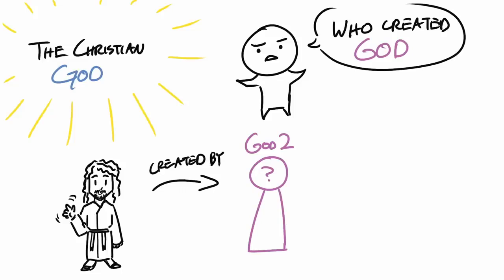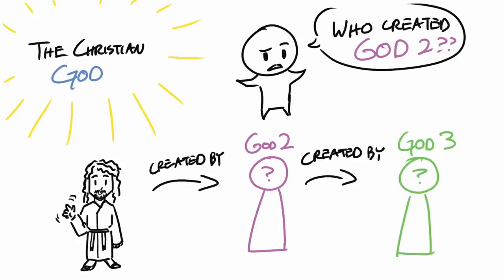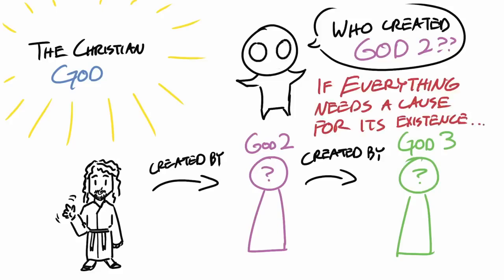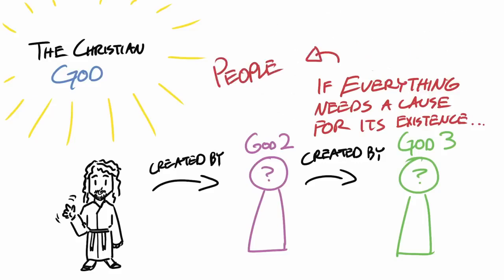Who then created God 2? Well, actually, the answer's pretty easy. God 3 obviously created God 2. And this creates a bigger problem. Because if everything needs a cause for its existence, then us as people could never exist.